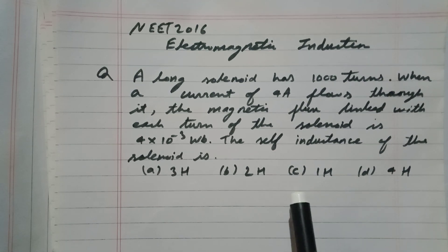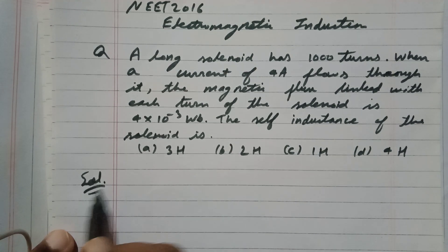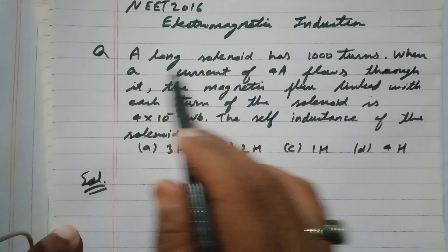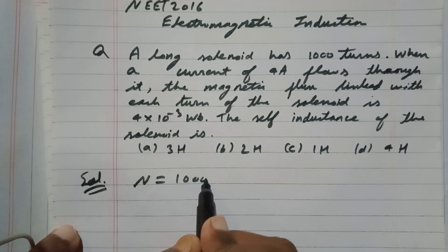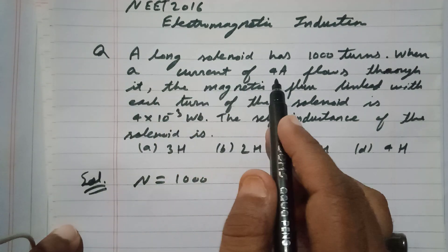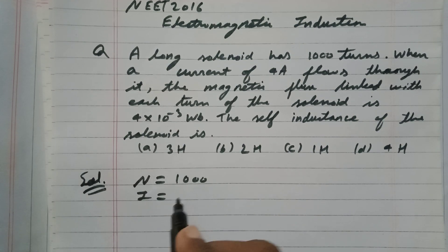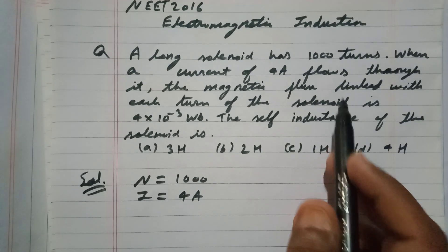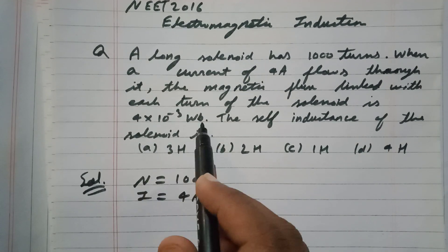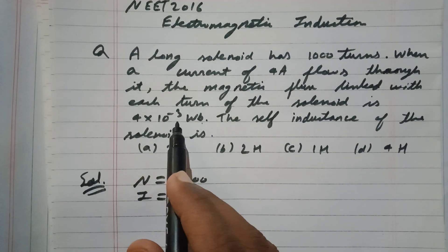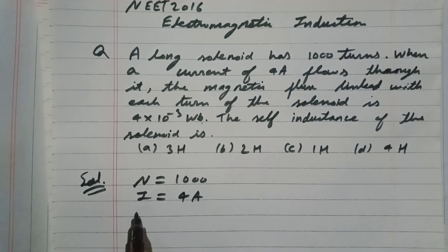Solution: First of all, I will write the given data. A long solenoid has 1000 turns, so N = 1000. When a current of 4 ampere—so current I = 4 ampere—flows through it, the magnetic flux linked with each turn of the solenoid is 4×10^-3 Weber, so magnetic flux φ = 4×10^-3 Weber.